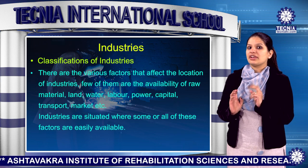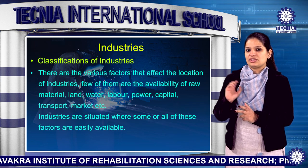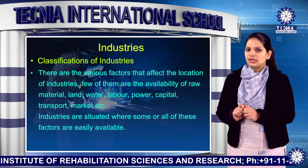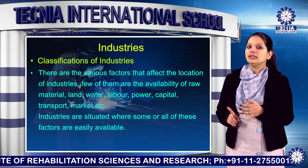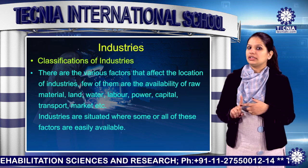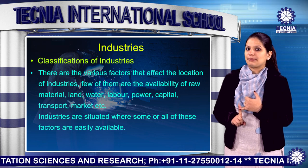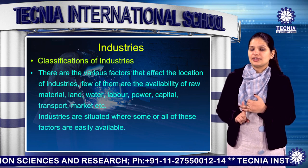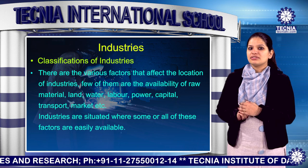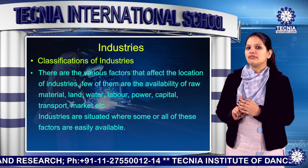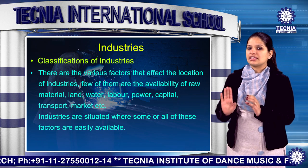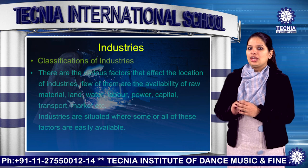There are various factors that affect the location of industries. A few of them are availability of raw material, land, water, labour, power, capital, transport, market, etc. Industries are situated where some or other of these factors are easily available.